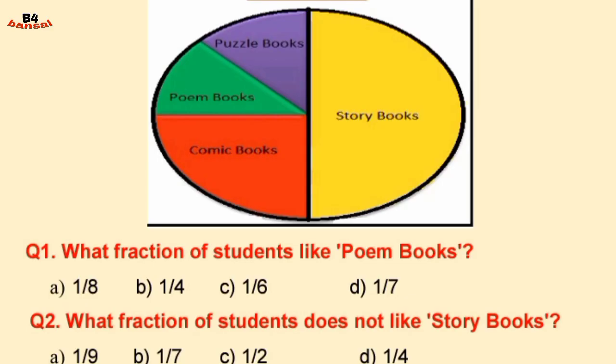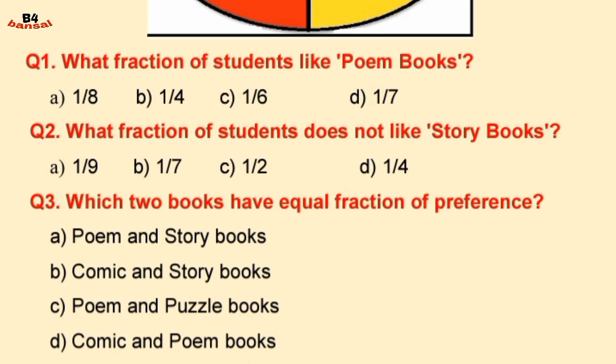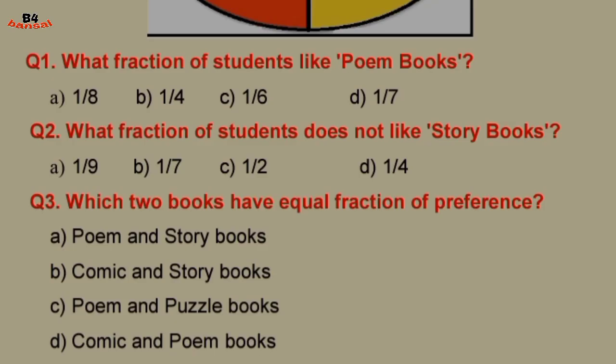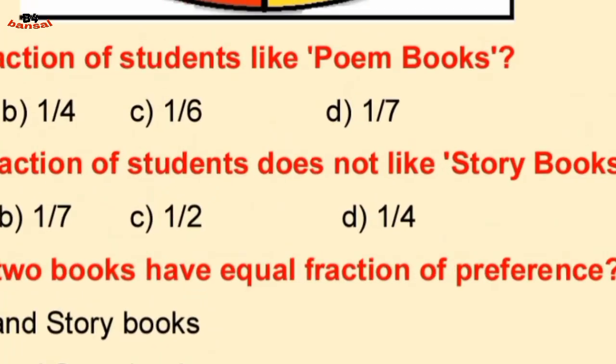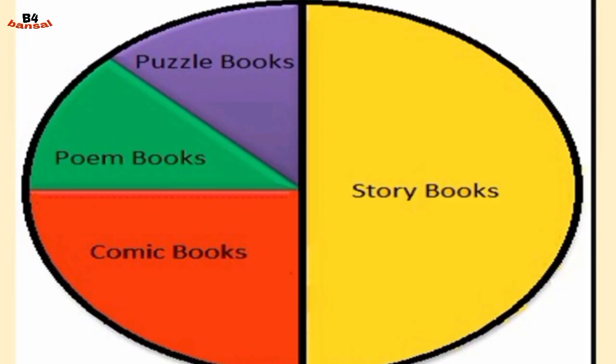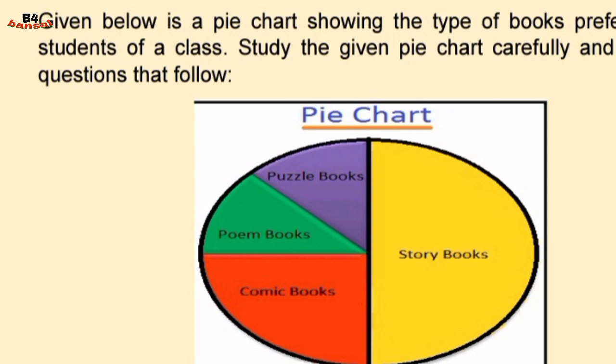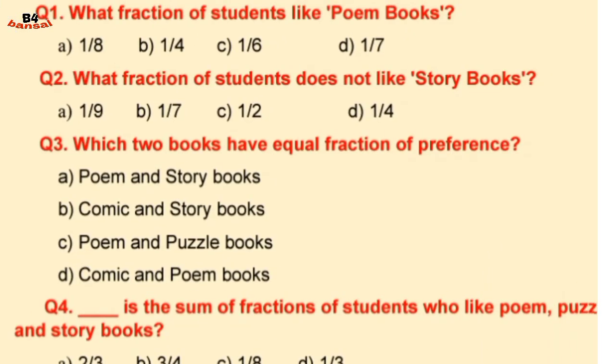Which two books have equal fraction of preference? We can easily see in the pie chart that the equal fraction is for puzzle books and poem books, so option C — puzzle books and poem books — is our answer.